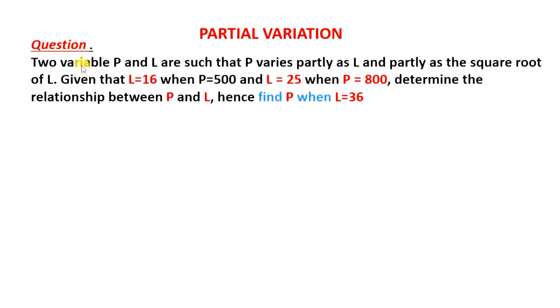The question we have here reads: two variables P and L are such that P varies partly as L and partly as the square root of L. Given that L is 16 when P is 500 and L is 25 when P is 800, determine the relationship between P and L, hence find P when L is 36.